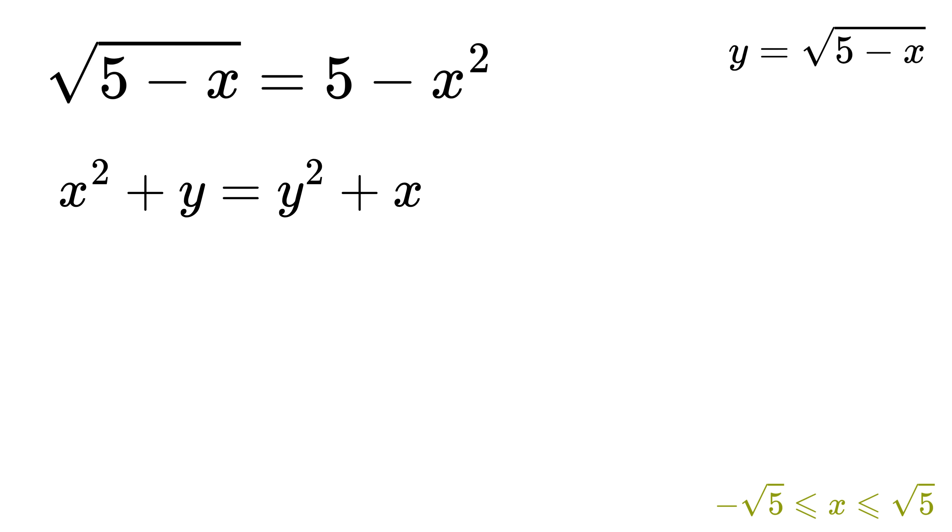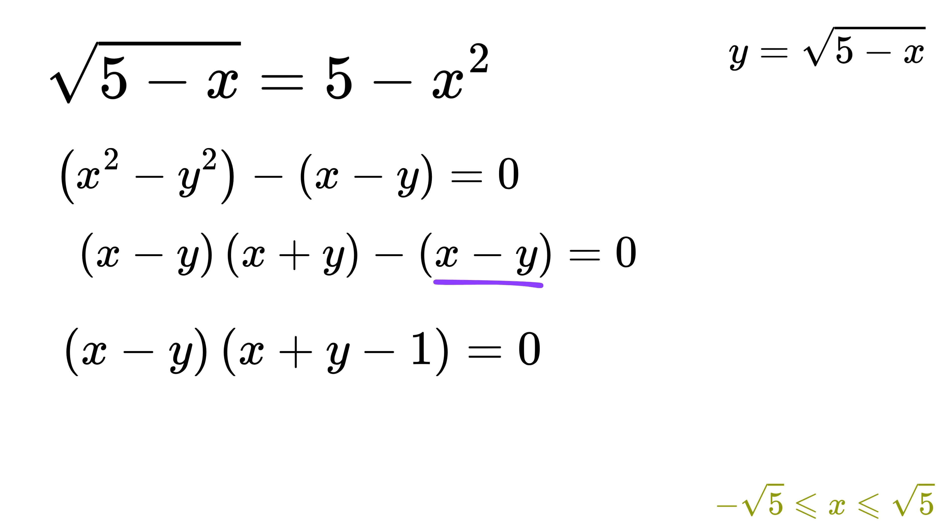Now, first bring this y squared to this side and group it with x squared to get x squared minus y squared. Then bring this x here to get x squared minus y squared minus x plus y equals 0. We can also rewrite this as minus of x minus y. Hey, from the difference of squares formula, we know that this thing is simply x minus y times x plus y, isn't it? Next, we can factor out the common term x minus y from both of them to get x minus y times x plus y minus 1 equals 0.